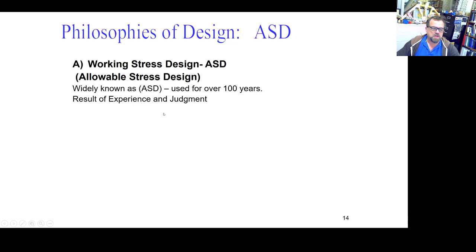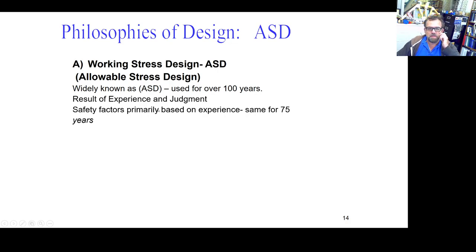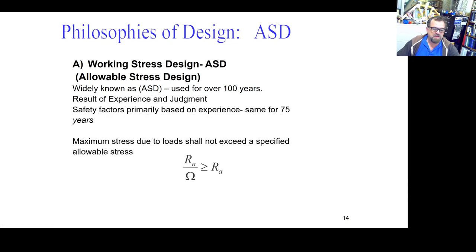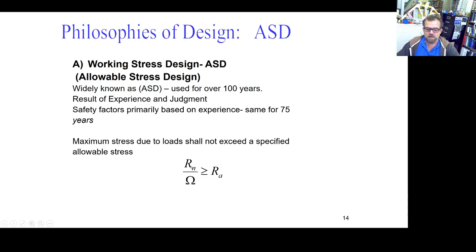So how does ASD work? ASD is basically a result of experience and judgment. There are safety factors, but those safety factors are based on experience more than research — purely experience. They have been altered only a couple of times over the past 80 to 90 years. So one factor of safety handles everything. This formula shows that this is the capacity of the section — how much tension, torsion, or moment the section can absorb.